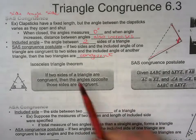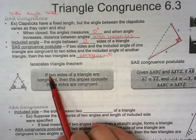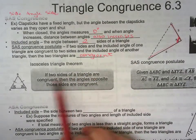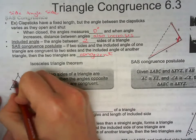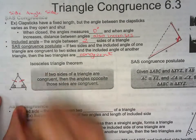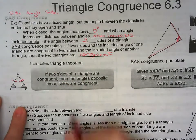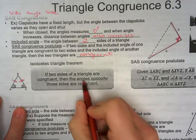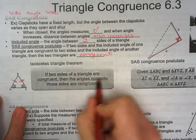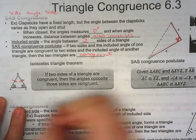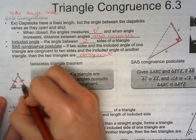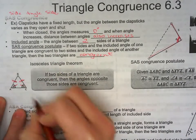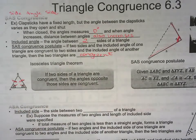The isosceles triangle theorem: if two sides of a triangle are congruent, then the angles opposite those sides are also congruent. So those two angles are also congruent.